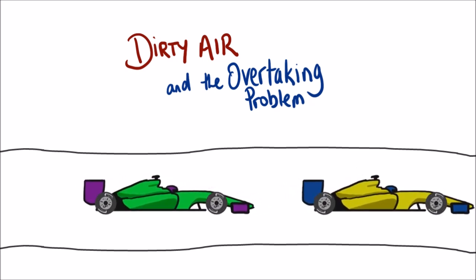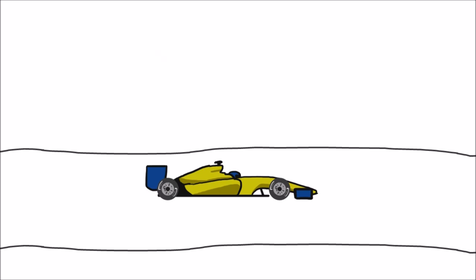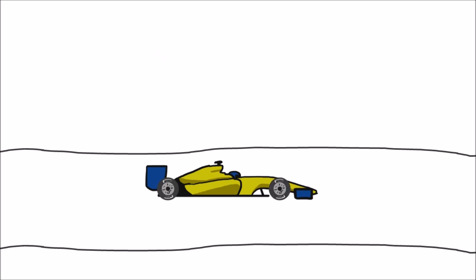To understand, we first need to understand some simple fundamentals of downforce and aerodynamics. The downforce generating parts of the car, mainly the wings, function to push the car into the ground. The more a car is pushed into the ground, the more it can grip the track, and the faster it can speed through corners.